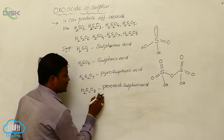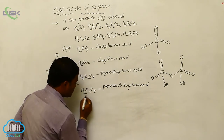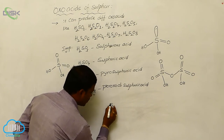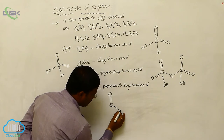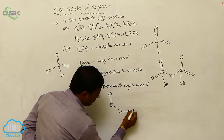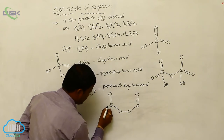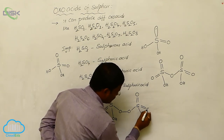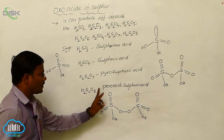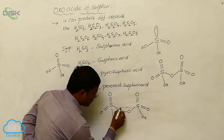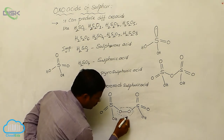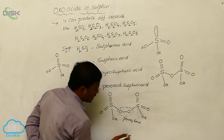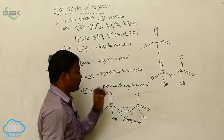The structure of peroxodisulphuric acid H₂S₂O₈ shows each sulphur with double-bond O, an OH group, and the two sulphur atoms connected via a peroxy O–O bond. This O–O connectivity is called the peroxy bond, and due to this peroxy bond, it is named peroxodisulphuric acid.